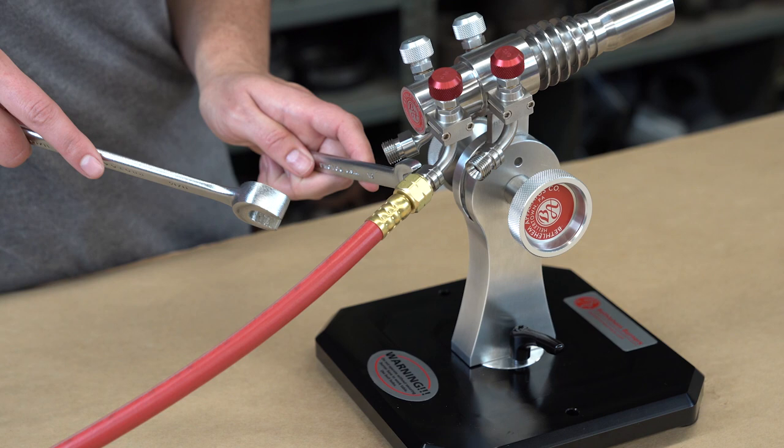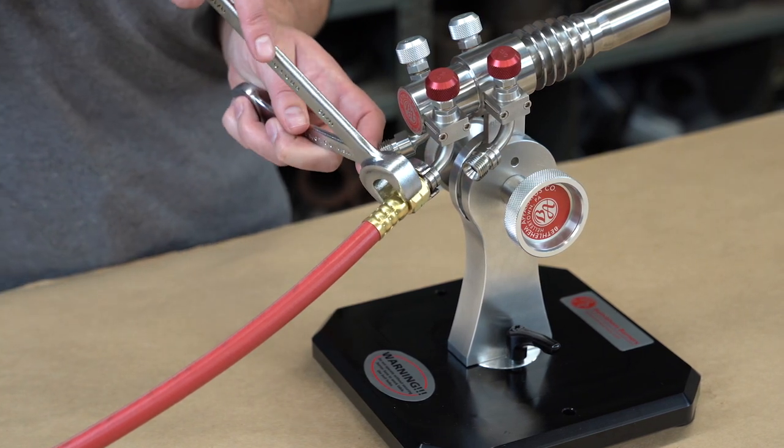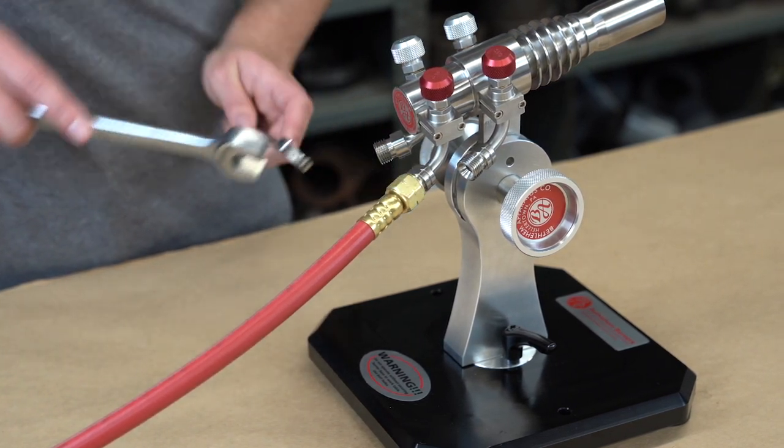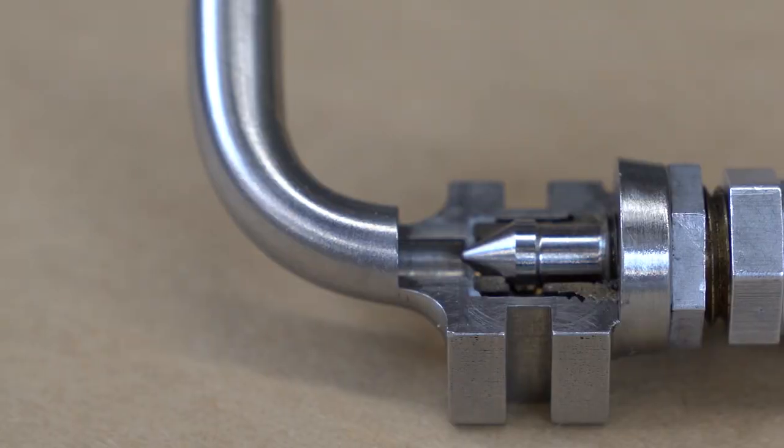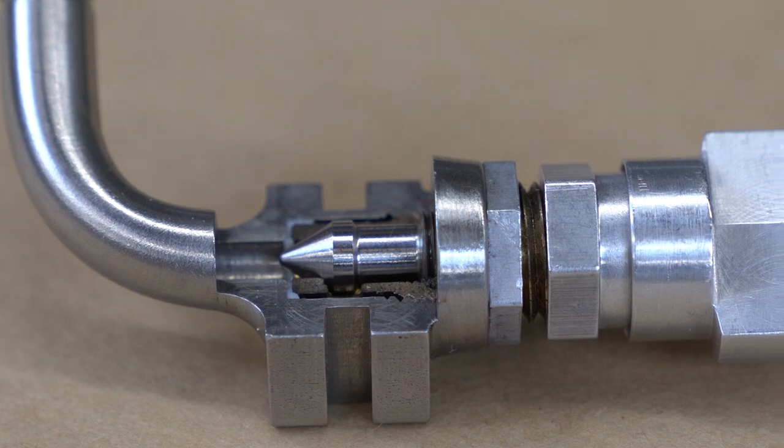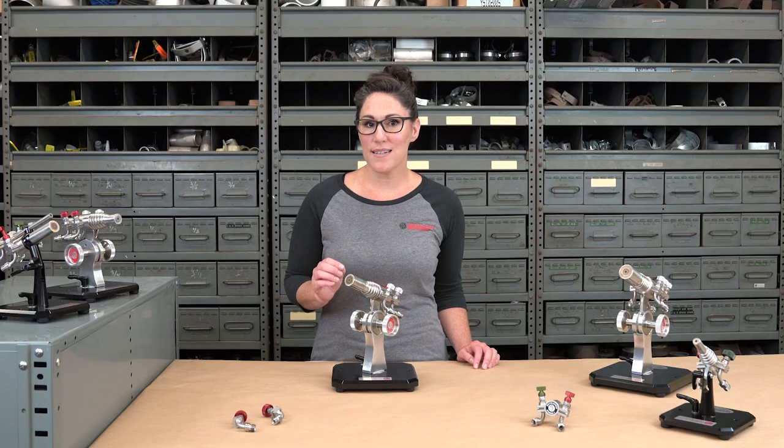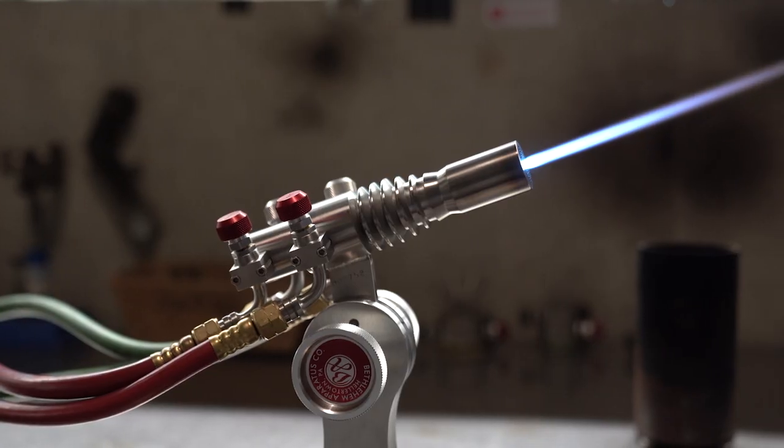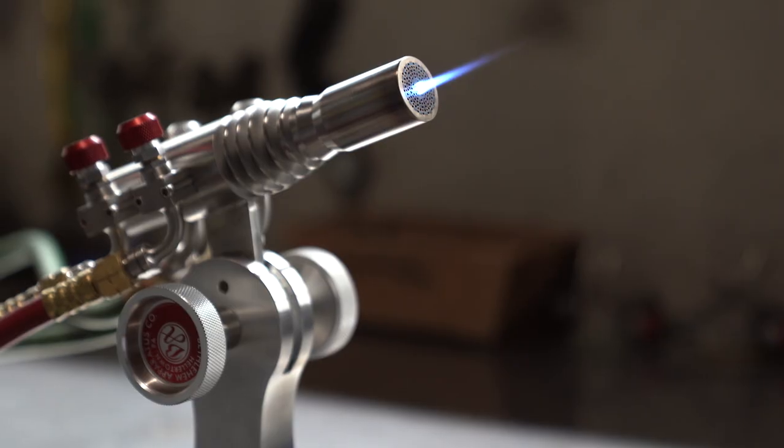The torch also comes with four of Bethlehem's modular precision needle valves. Inside the valve is a stainless steel pin with sharp angles for precise control of fuel flowing through the torch, letting you drastically change the flame's temperature, width, and the fuel mixture ratio.